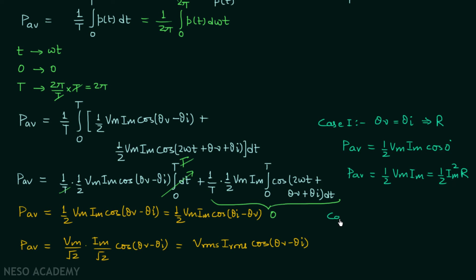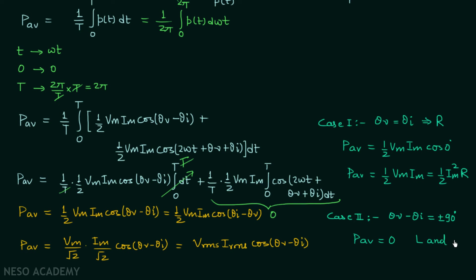In case 2, θv − θi = ±90°. We know cos(±90°) = 0, and therefore the average power will be zero. θv − θi = ±90° occurs when we have a purely reactive circuit. So from this discussion we can say that a resistor will absorb power all the time, whereas an inductor and capacitor will absorb zero average power.